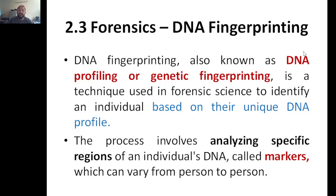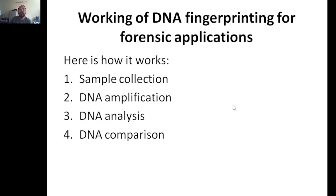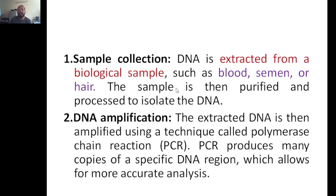DNA fingerprinting, also known as DNA profiling or genetic fingerprinting, is a technique used in forensic science to identify an individual based on their unique DNA profile. The process involves analyzing specific regions of an individual's DNA called markers, which vary from person to person. The main steps in DNA fingerprinting for forensic applications are: sample collection, DNA amplification, DNA analysis, and DNA comparison.